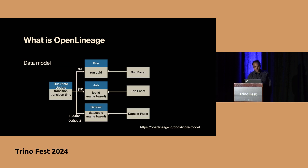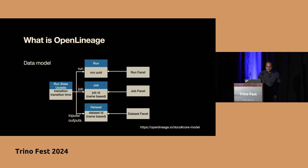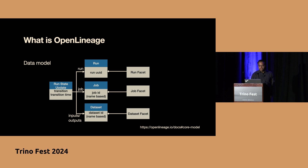Let's take a deep look at the open lineage data model. Every time there is a data transition, it emits a run state update event consisting of several building blocks: a run entity, a job entity, and a dataset entity. A job is an abstraction on top of the process which produces or consumes datasets — think of a Spark job, Airflow DAG, or in the context of Trino, a SQL query doing data mutation. A run is a particular instance of the job with a unique identifier — if job is a class, run is an object of that class.